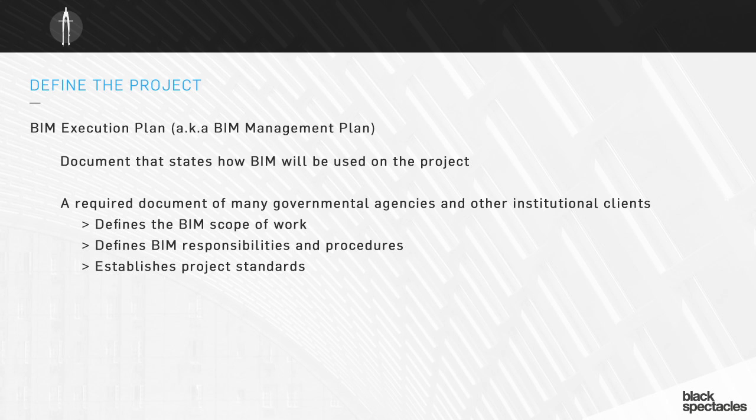The very first thing you need to do is figure out how you're going to execute this using Revit. The most common method for doing that is creating what's commonly called a BIM execution plan, sometimes referred to as a BIM management plan. Basically this is a document — a Word file or an Excel file, or a combination of the two — that explains how you're going to approach this project using Revit and BIM. For many governmental agencies or institutions, this is a required document of the contract.